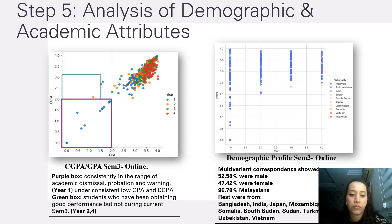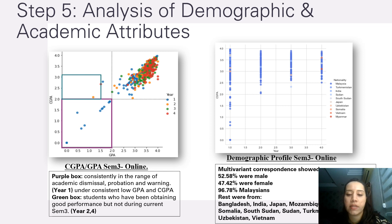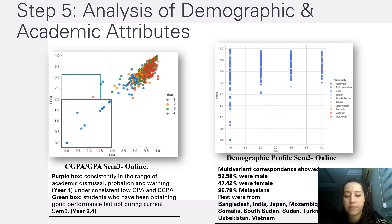Moving on to the third semester — the online learning method. The purple box shows only year one students under consistently low GPA and CGPA. The green box shows year two and year four students who had been obtaining good performance but not during this semester. The demographic profile for this semester was 52.58% male, 47.42% female, 96.78% Malaysian, with the remaining students from Bangladesh, India, Japan, Mozambique, Somalia, South Sudan, Sudan, Turkmenistan, Uzbekistan, Vietnam, and others.